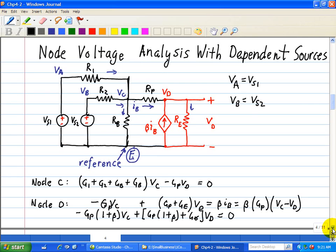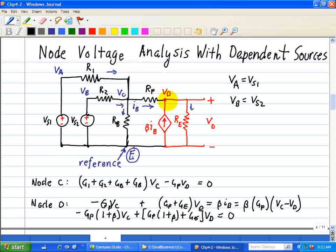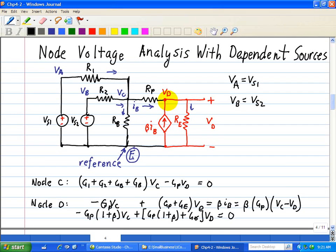However, when we express the dependent source terms in terms of the unknown voltages, in this example C and D, and move them to the left side of the equations with the other terms involving the unknown node voltages, this step destroys the coefficient symmetry but leads to a set of node voltage equations that describe this active circuit.